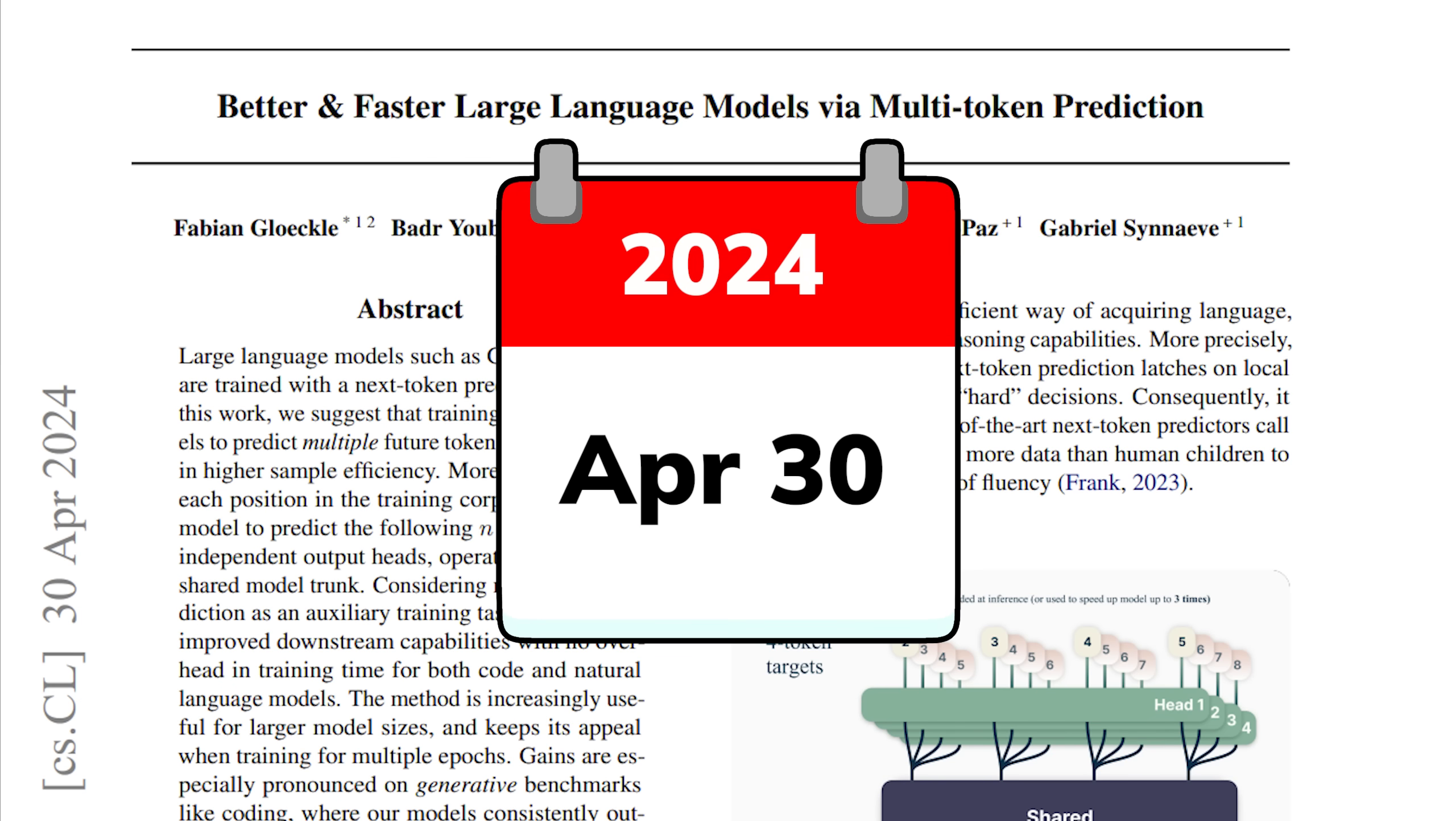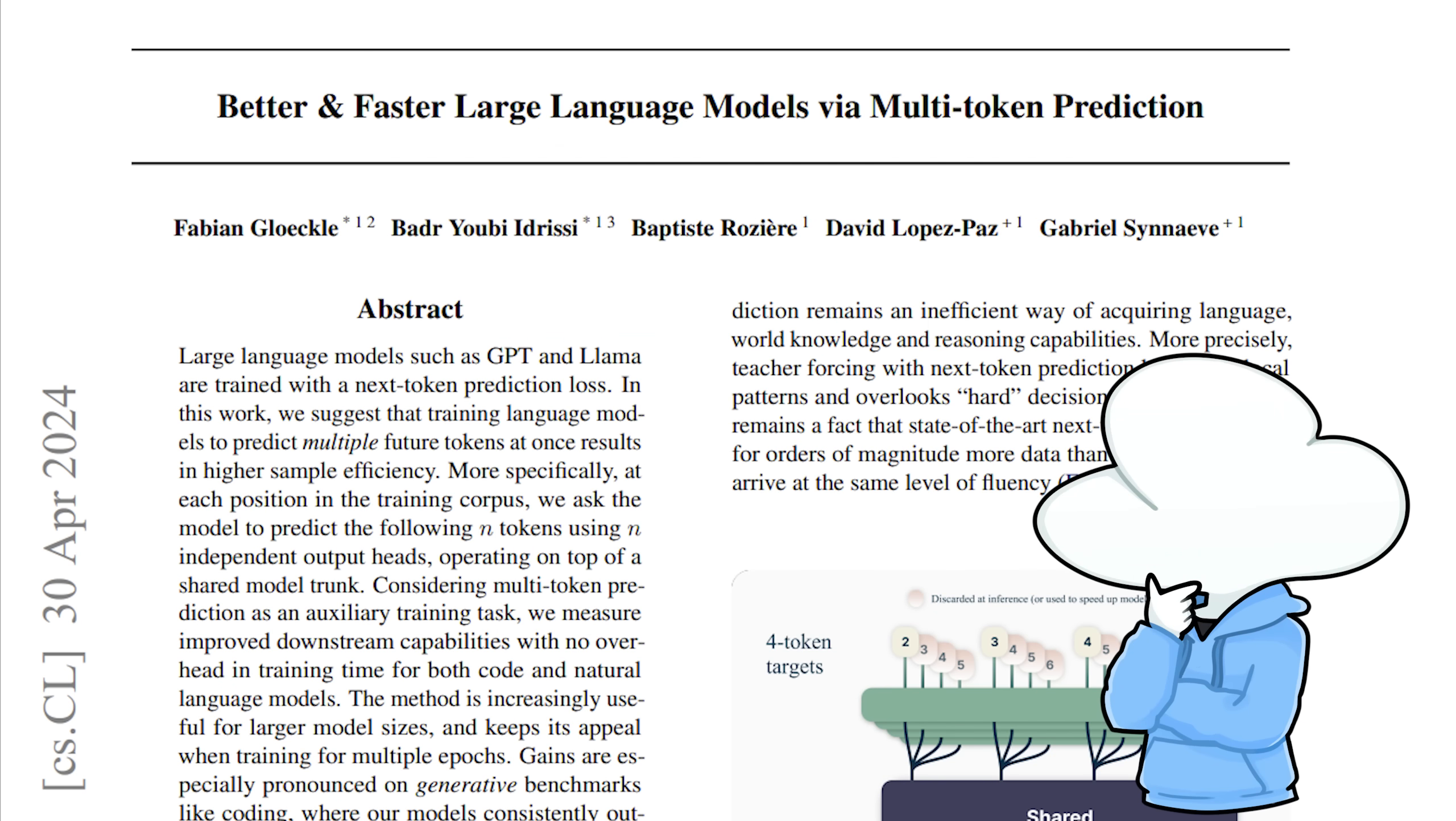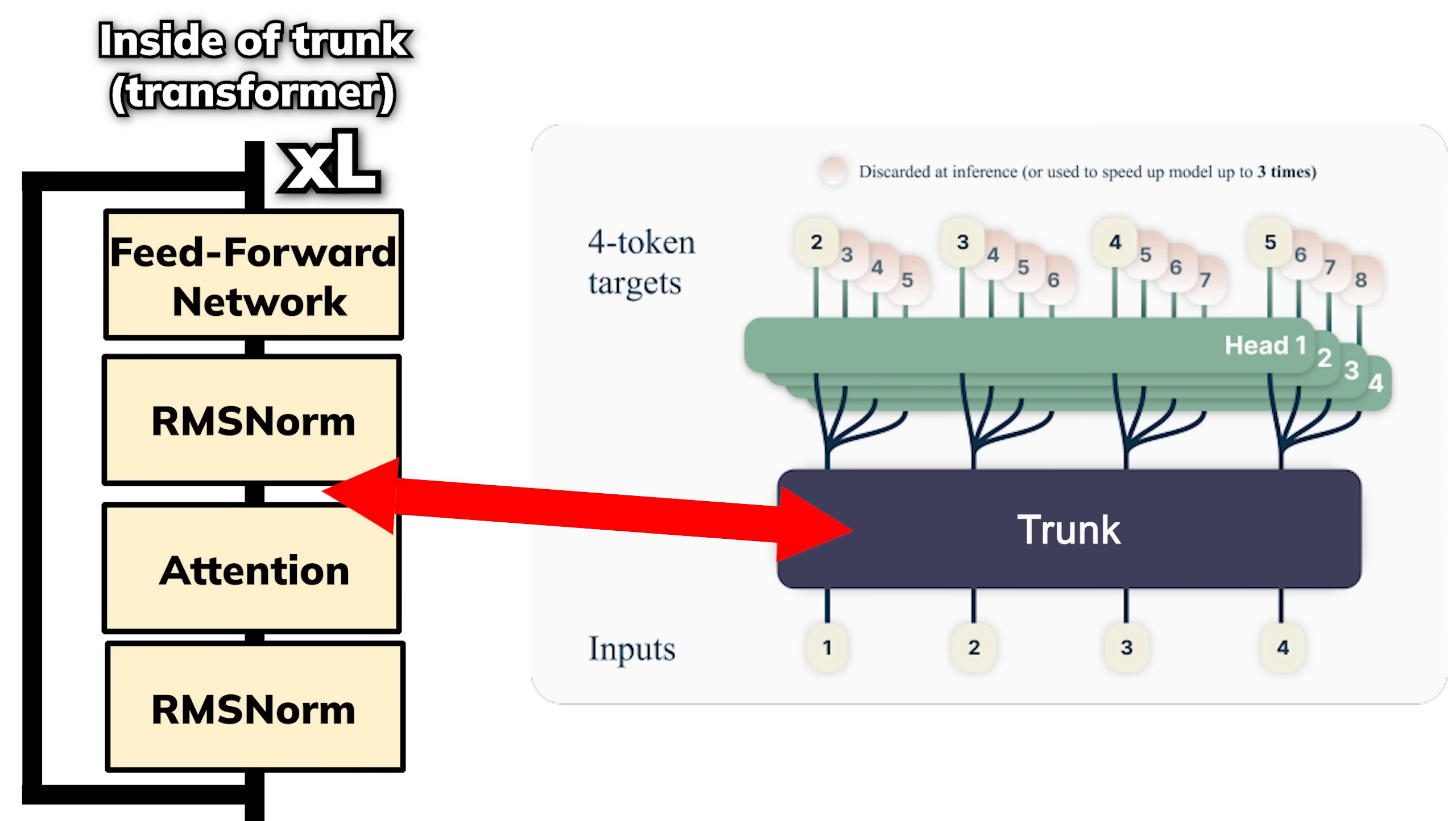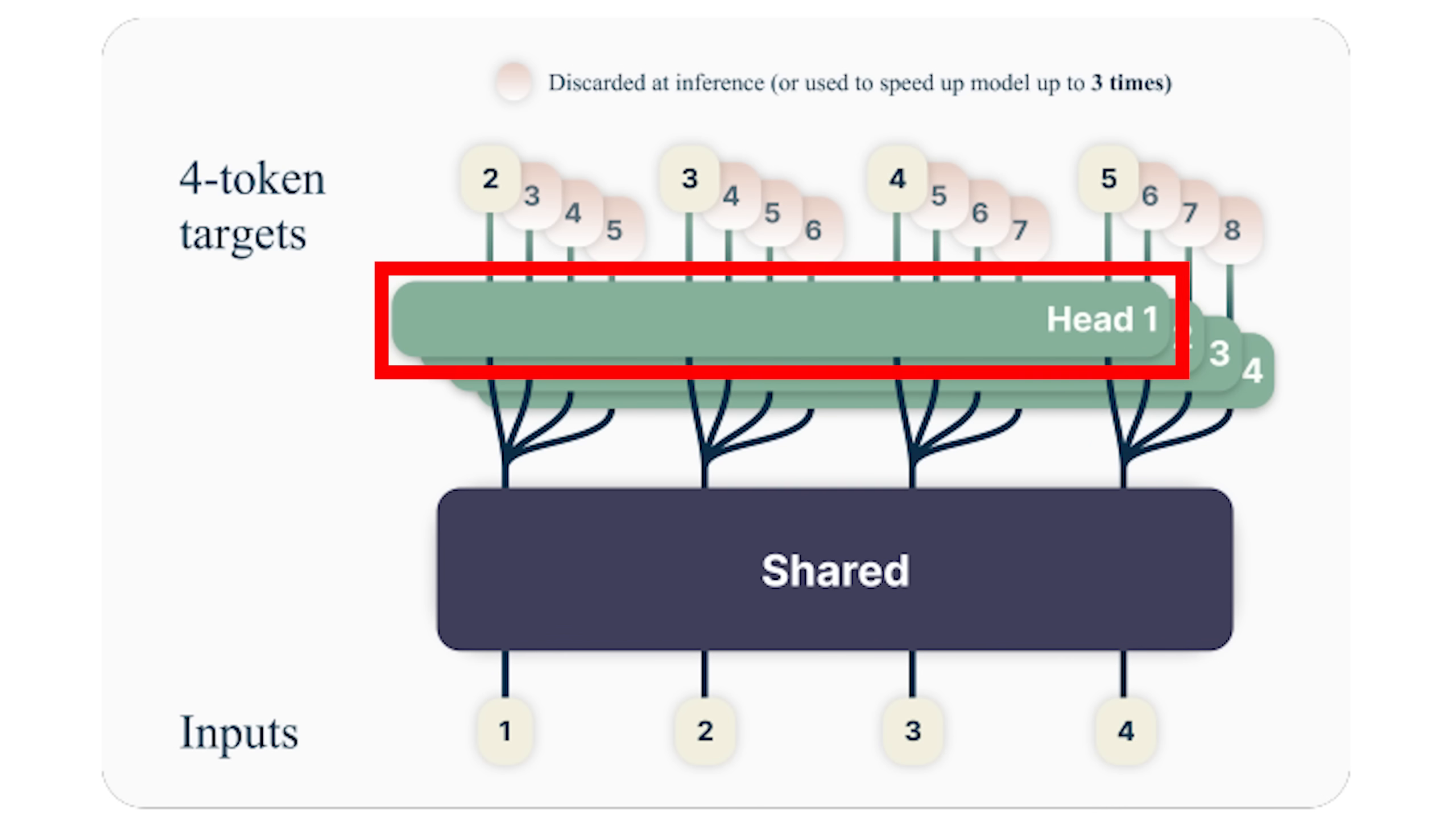The initial approach, which was proposed around a year ago, doesn't have much of a plot twist architecturally either. It uses a standard transformer model, which in this case is called the trunk, to process the input text and generates an internal representation for up to the current position T. The only part that is different is that, instead of just one output head predicting the next token, there are multiple independent output heads that predict the next few positions in parallel.